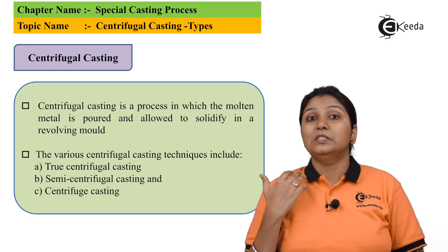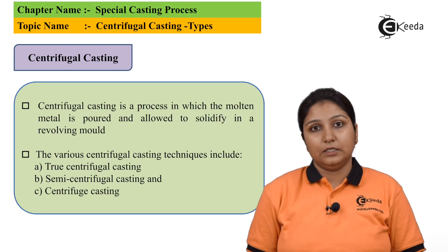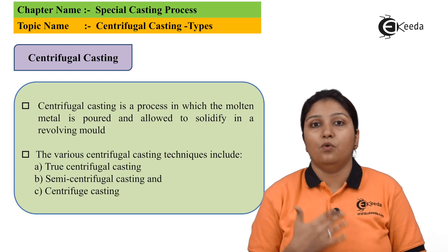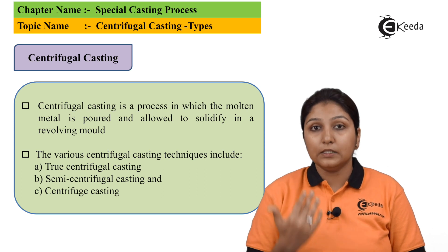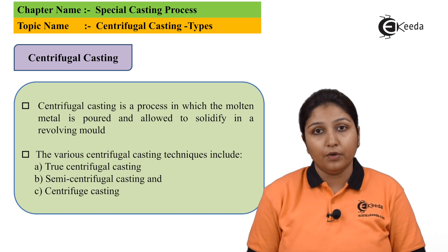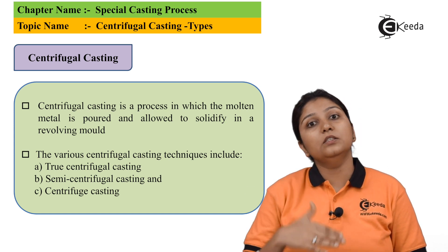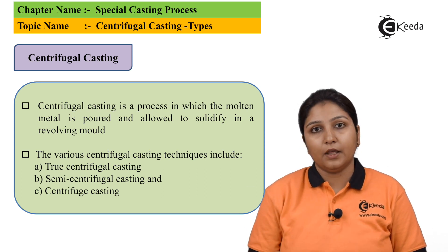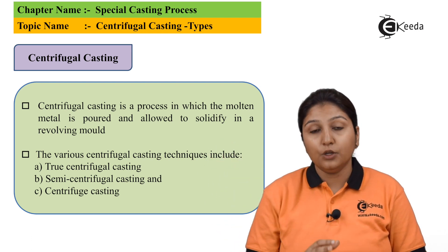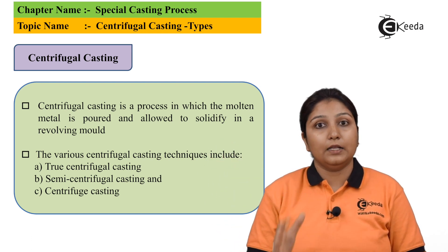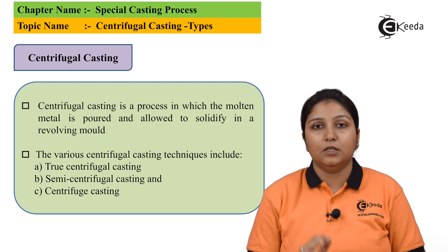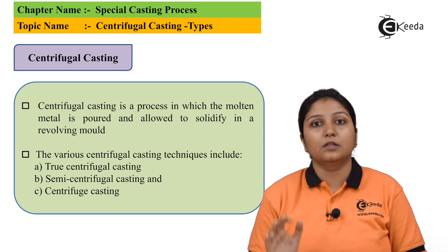When we talk about centrifugal casting, centrifugal casting means revolving — basically, your casting to be made is getting revolved. In this revolving direction, the molten metal is poured and your exact casting is made. This is the basic centrifugal casting process.